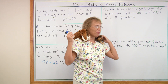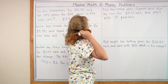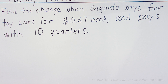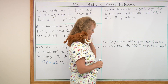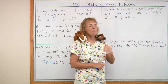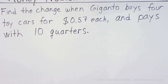Now, Giganto, you get to go shopping. Let's read here. Find the change when Giganto buys four toy cars for 57 cents each and pays with 10 quarters. Where did you get the quarters? In his piggy bank. Four toy cars for 57 cents each.